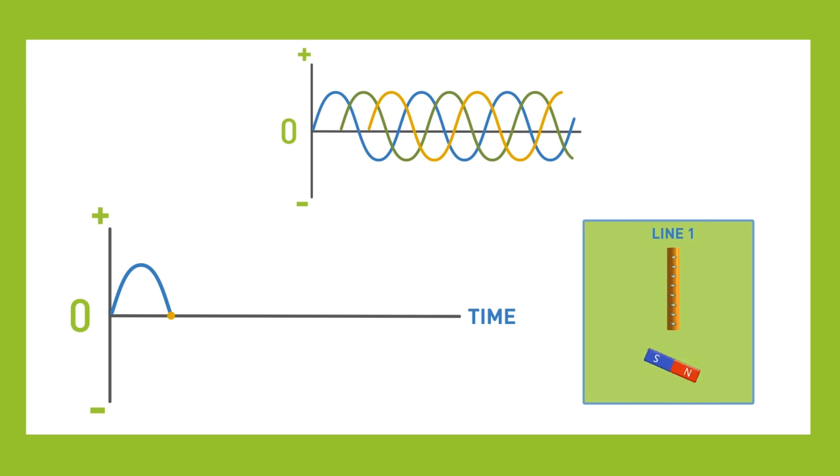As the negative pole starts to come closer, the current reverses and moves in the other direction towards another peak before returning to zero current. This completes one full cycle for that line.